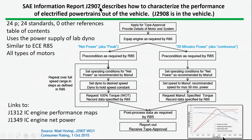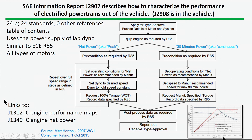SAE J2907, which is an information report, starts to talk about how one describes the performance of powertrains that are electrically driven. Clearly, you'd like to know about the horsepower, the torque, and so forth. Manufacturers want to advertise that, and the question is how you determine it. This 24-page document uses a dynamometer test to determine the performance characteristics of electrified powertrains, with two particular kinds of measures: a peak power measure and a continuous measure. The process for collecting those measurements is described, along with other related data.